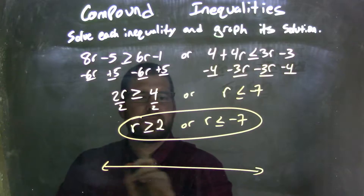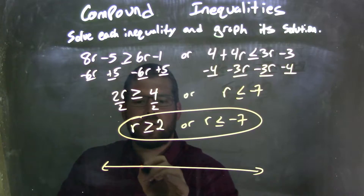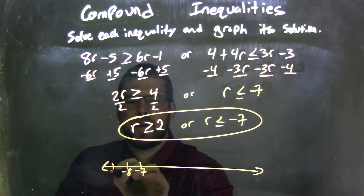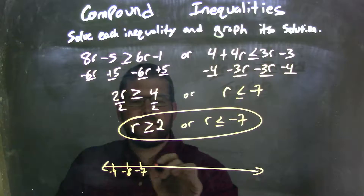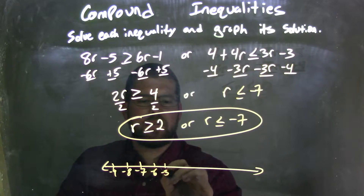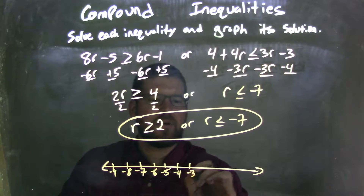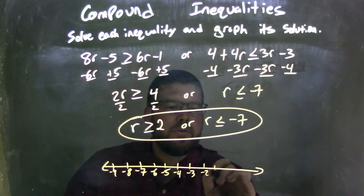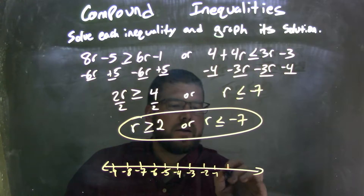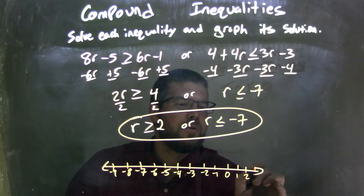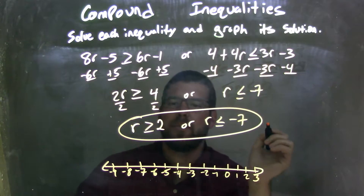So now I need to graph them. I draw my number line here. I'm going to include negative 7, so I have negative 9, negative 8, negative 7, negative 6, negative 5, negative 4, negative 3, negative 2, negative 1, 0, 1, 2, and 3.